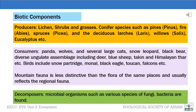The consumers are the fauna, which include the panda, wolves, and several large cats such as the snow leopard, black bear, diverse ungulate assemblies including the deer, blue sheep, taquin, Himalayan thar, etc. Birds include snow partridge, monal, black eagle, toucan, falcon, etc. Mountain fauna is less distinctive than the flora of the same place and usually reflects the regional fauna.